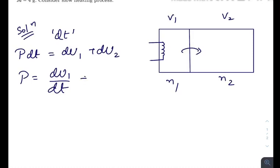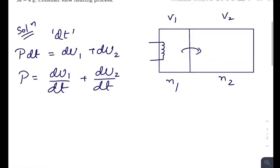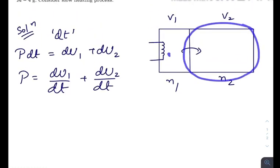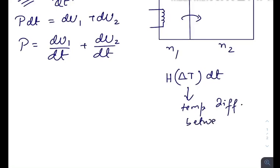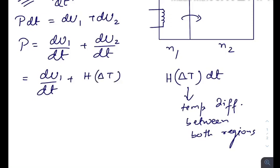Increase of internal energy of region 2 is due to the transfer of heat from left to right, and that transfer of heat is H times del T into dt. So this is the temperature difference between both regions.